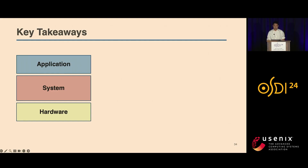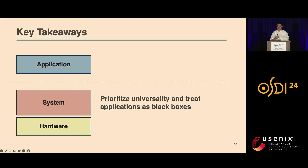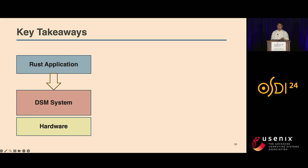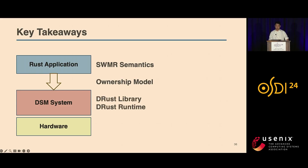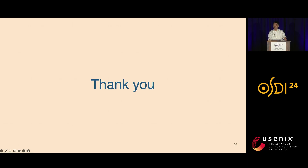The central idea of today's talk is that we should leverage application semantics into the design of systems. Traditionally, the design of many systems — including previous DSM systems — prioritizes generality and treats applications as black boxes, so application semantics always stay within user programs, causing systems to miss many optimization opportunities. DRUST challenges this norm by integrating the single-writer multiple-reader semantics inherent in Rust applications into the design of underlying DSM systems. This integration is achieved through the Rust ownership model and enables the DRUST library and runtime to effectively reduce coherence overhead. Looking forward, there is great potential to leverage various kinds of application semantics into many other systems using diverse techniques, opening new avenues for system optimizations. Thank you all for listening, and any questions are welcome.